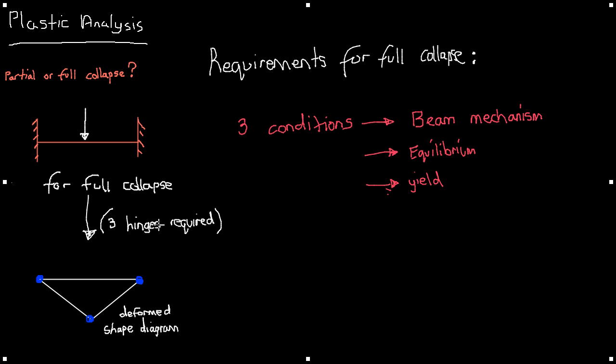So when identifying full collapse of a beam we primarily need to be concerned with the mechanism condition and the yield condition and whether those are satisfied. If they're satisfied then we have full collapse of a beam. We'll be looking at these three conditions in more detail in further tutorials.